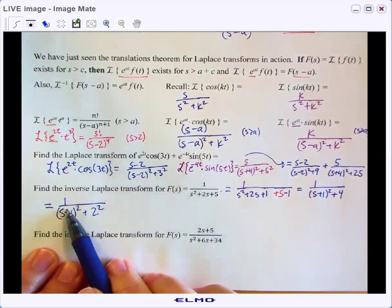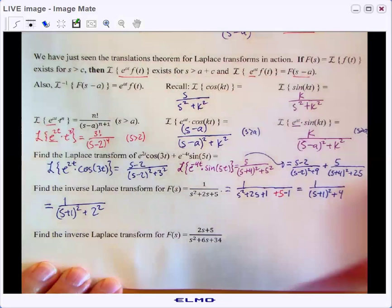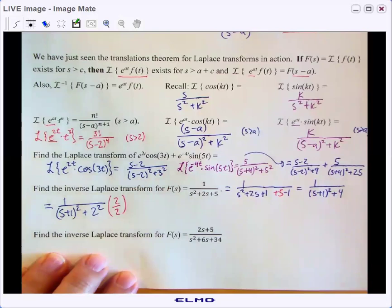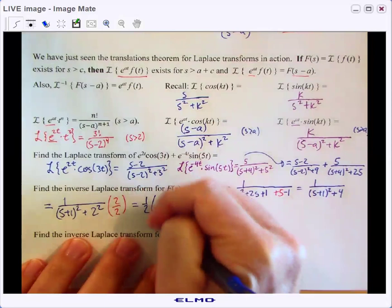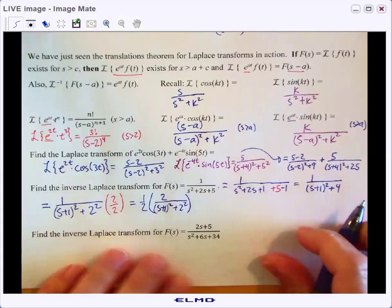So this is looking a lot friendlier. This guy is still 1 over s plus 1 squared plus 2 squared. So he's looking a lot like the sine guy, except for the sine Laplace transform we need the k to be what's being squared down in the bottom, and so we need this to be a 2 up here. Well we don't have a 2 up there, so let's make a 2. Let's times by a giant 1, 2 over 2. And we will then have 1 half times 2 over s plus 1 squared plus 2 squared, which now we can do the inverse Laplace transform to.